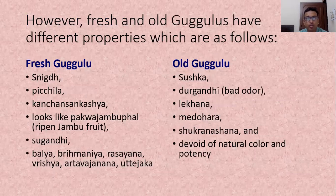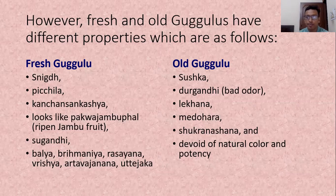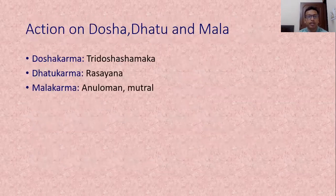The action of fresh Gugul and old Gugul is quite different. Fresh Gugul is snigdha, pichhil, kanchana-sankash — it looks like ripened Jambu fruit — aromatic or sugandhi, and has Balya, Brahmanavardhan, Rasayan, Vrishya, Artavajanana and Uttejak action. Old Gugul is shushka, durgandhi with bad odor, and has Lekhan, Medohar, Shukranashana properties, and is devoid of natural color and potency. Gugul is Tridosha Shamak, has Rasayan properties, and Anuloman and Mutral action.